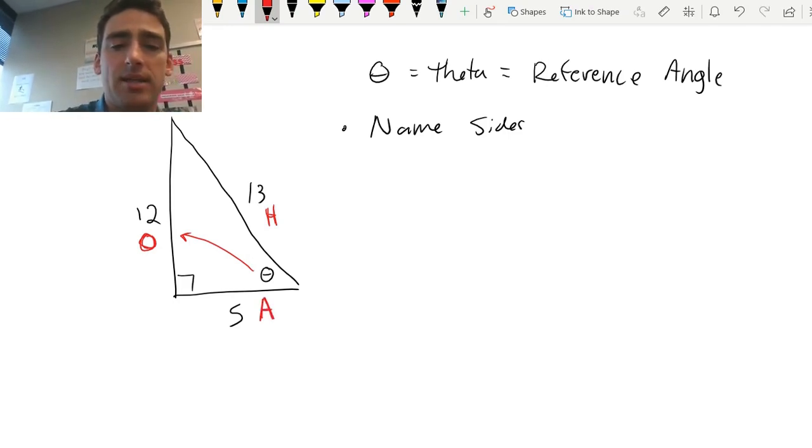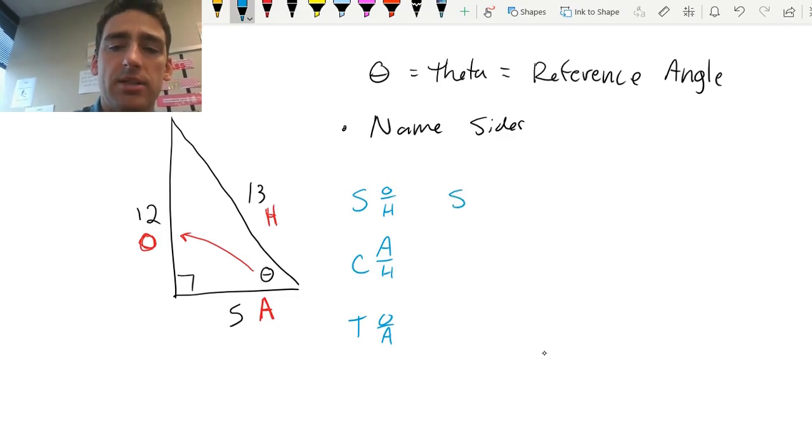Once I label my sides, now I can go through and I can figure out all my relationships. So remember, SOH-CAH-TOA. So SO is for sine. Sine of theta is opposite divided by hypotenuse. So that is 12 divided by 13.